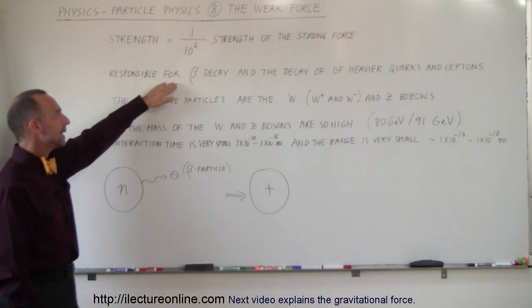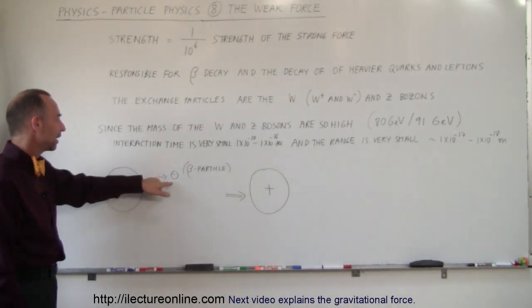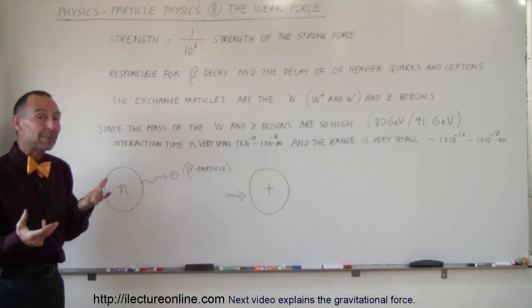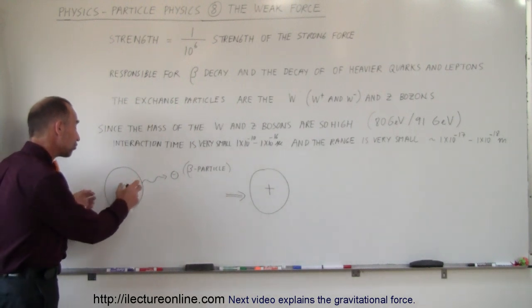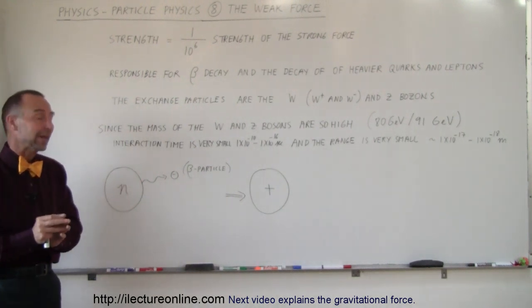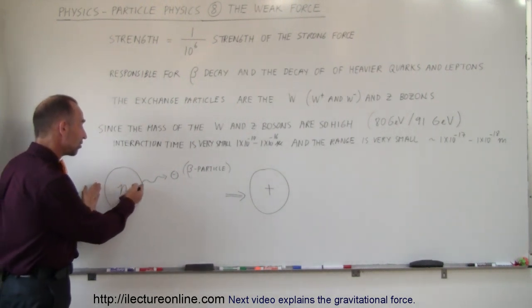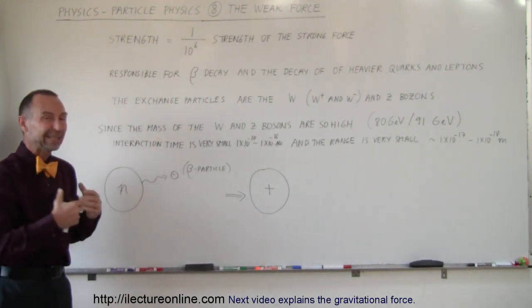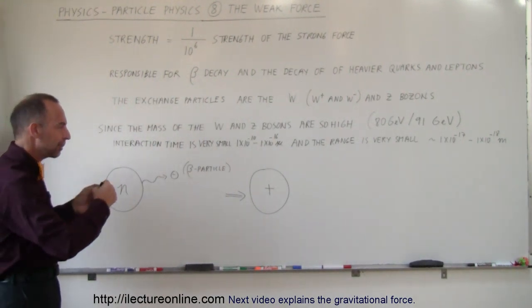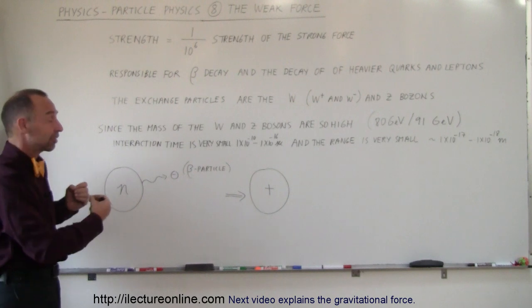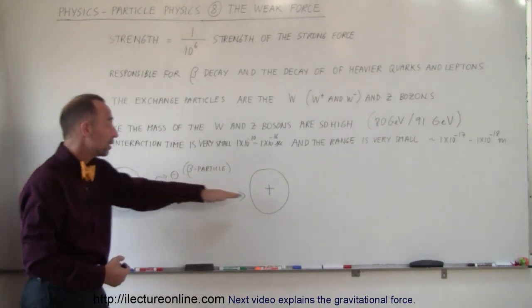For example, the beta decay is the ejection of an electron from a nucleus of an atom and typically that's the ejection of an electron from a neutron in the nucleus of an atom. So when a neutron ejects an electron, a beta particle, the reason why we call an electron a beta particle is because it's ejected from a nucleus or ejected from a neutron, it turns a neutron into a proton.